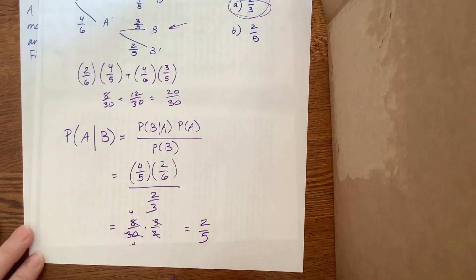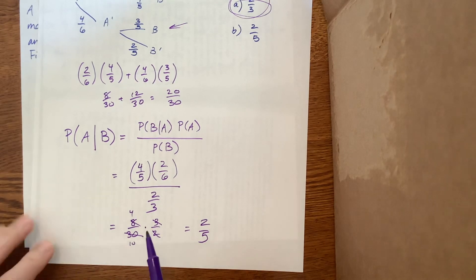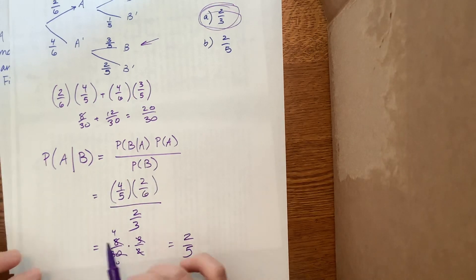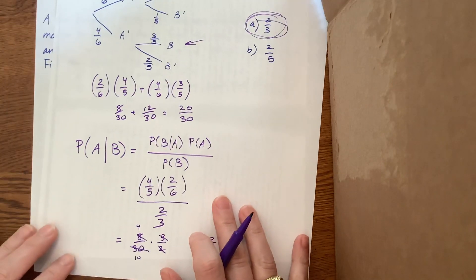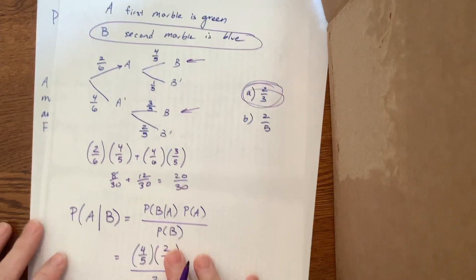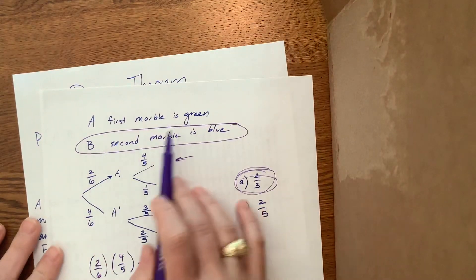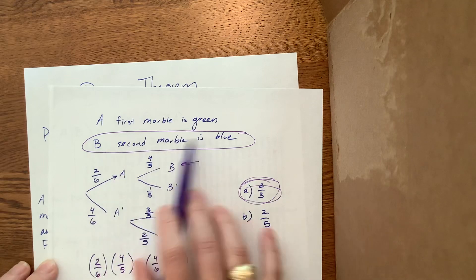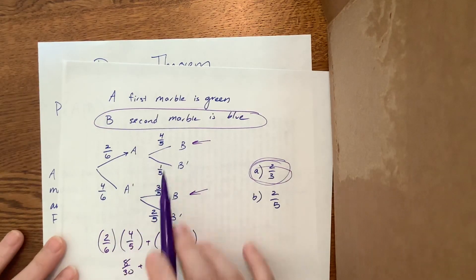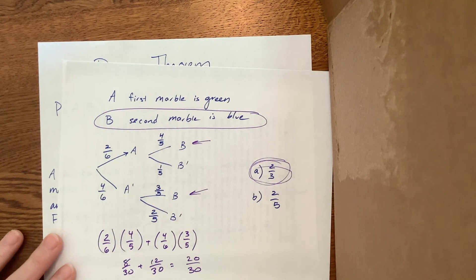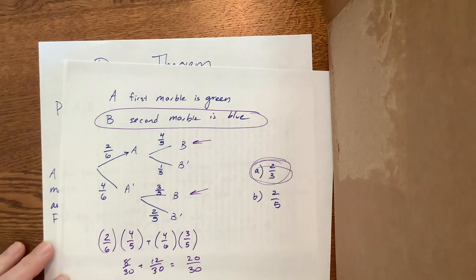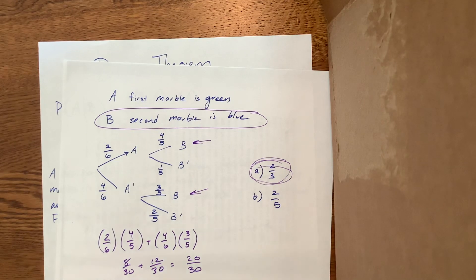These take practice. The more you do them, the more you can wrap your head around them. A helpful trick is to write out the words — define what A and B are clearly, and label each part of the tree diagram with a full description. Go practice, and let me know if you have questions. Good luck.